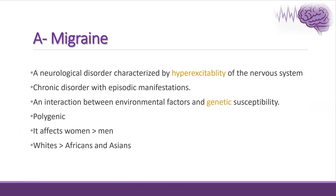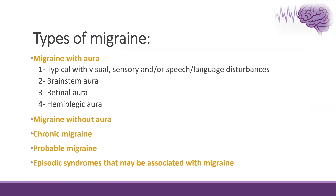Migraine is a neurological disorder due to hyper-excitability of the nervous system. It is chronic with episodic manifestations, due to both environmental and genetic susceptibility. It affects women more than men, and white populations more than African and Asian. Types of migraine include migraine with aura, migraine without aura, chronic migraine, probable migraine, and episodic syndromes that may be associated with migraine.